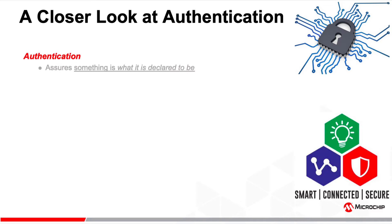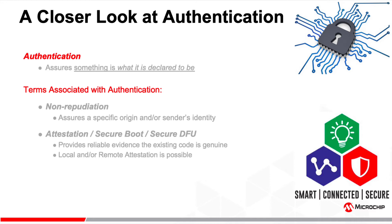Let's look at authentication a bit closer. When something authenticates, it means it is what it claims to be. Non-repudiation is a stronger form of authentication — it proves the specific origin of a message or data. Attestation is also a form of authentication, used in secure boot and firmware updates. It assures code has not been tampered with. There can be local attestation and remote attestation. An example of local attestation would be a secure boot. An example of remote attestation is a remote host asking the device for proof it's still running 100% genuine code. We'll get into the mechanisms for attestation later in this presentation.